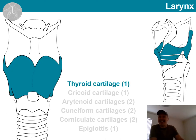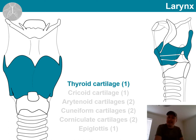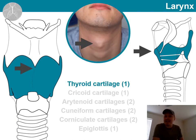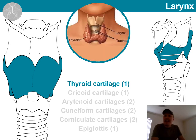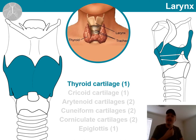Let's start with the largest and most prominent one — the thyroid cartilage. There is one of these. This cartilage contains a part commonly known as the Adam's apple. The proper anatomical term for this is the laryngeal prominence. It is typically more prominent in men. The thyroid gland, which we talked about at the start of this course, is located at this level, so it can be a good anatomical landmark for locating it.